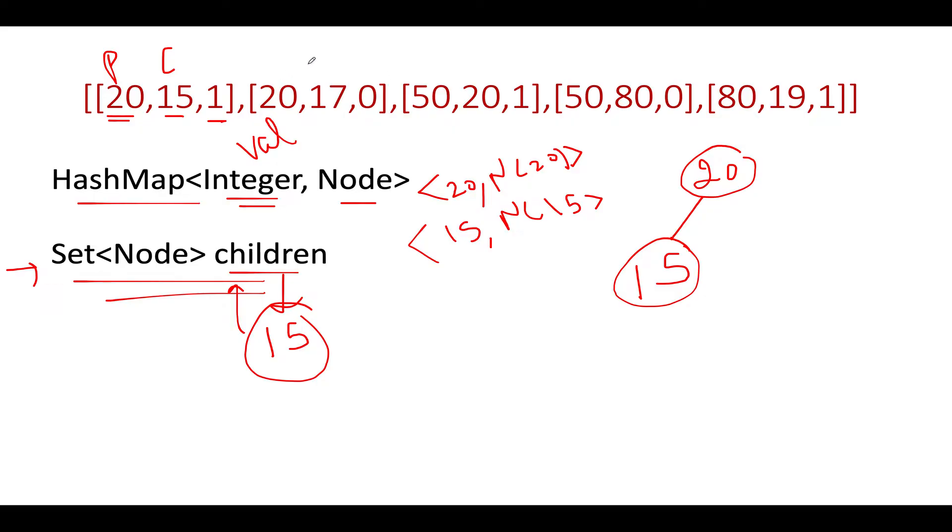Let's proceed ahead. Next we see parent as 20, child as 17, and it's the right child. Do we see the node corresponding to 20? Yes we do see that. That simply means we'll not create a new node this time. Let's extract it. We have extracted it. Do we see 17 in the hash map yet? No, it's not there, as a result of which we'll create 17.